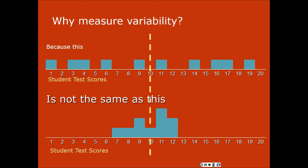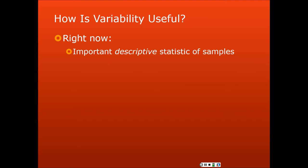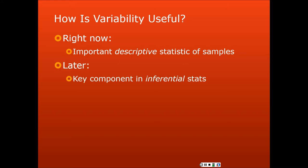We almost always want to know about variability as well as the center. Sometimes variability is called spread. The top distribution has more spread — the scores are more spread out away from the center. The bottom one is more clumped toward the center. The center finds where the middle is, and measures of spread like standard deviation and variance tell you how far away the other scores are from that on average. Right now it's useful as a descriptive statistic about a data set or sample, but later it's going to be a key component in inferential statistics. Variance specifically is a really important chunk of almost all the inferential statistics we'll use later this semester.